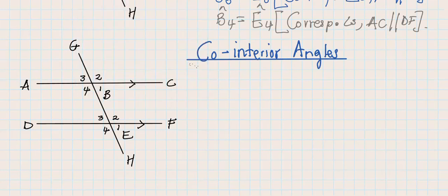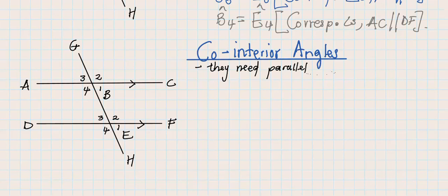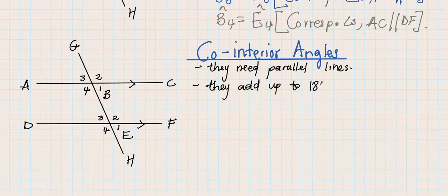Co-interior angles need parallel lines. Also, co-interior angles add up to 180 degrees. That's what we know about co-interior angles.